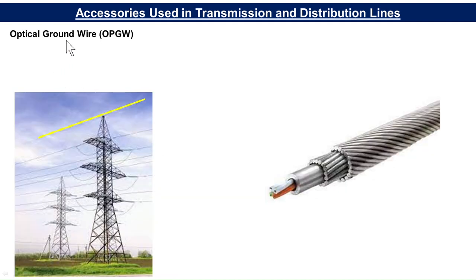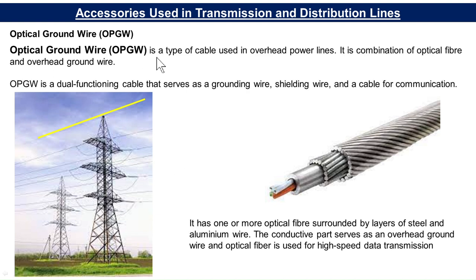Then there is the optical ground wire (OPGW). This is the latest technology in transmission, where the ground wire is replaced by an optical ground wire. It has two parts: an aluminum sheath on the outside and optical fibers inside. OPGW is a dual-function cable used in overhead power lines — it serves as a ground wire and shielding wire, and also as a cable for high-speed data communication. The conductive part acts as the overhead ground wire and the optical fiber is used for high-speed data transmission.